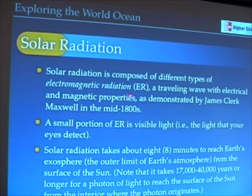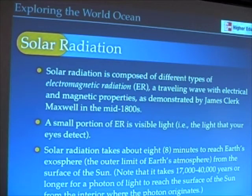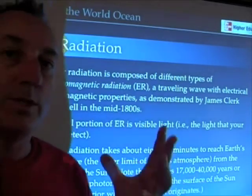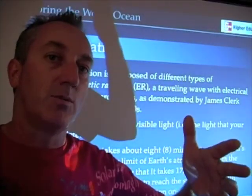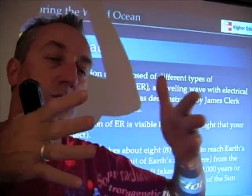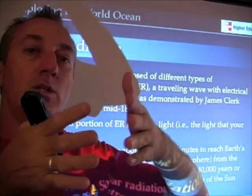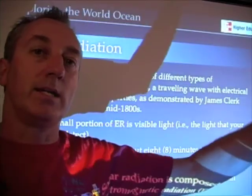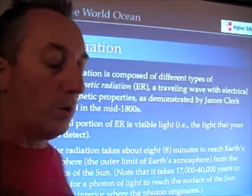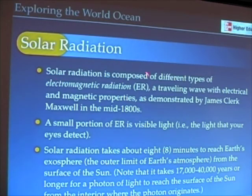Solar radiation is actually composed of different types of electromagnetic radiation. Electromagnetic radiation is a type of radiation that involves both electrical and magnetic properties — we don't really need to get into that too much. But just understand that what comes from the sun is electromagnetic radiation, and it includes a wide range of different kinds of radiation that we're already familiar with. Just remember the electromagnetic spectrum and what it's composed of.